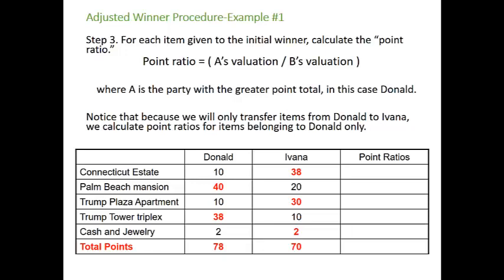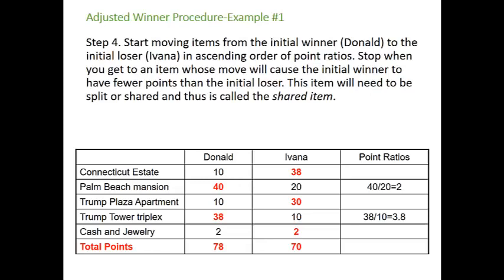Since we're only going to be transferring items from Donald, our initial winner, to Ivana, our initial loser, we only calculate point ratios for items belonging to Donald. For the Palm Beach mansion, we take Donald's points of 40 divided by Ivana's points of 20, giving a point ratio of 2. For the Trump Tower triplex, we take Donald's 38 points divided by Ivana's 10 to get a point ratio of 3.8. We start moving items from Donald to Ivana in ascending order of point ratios, stopping when a move would cause Donald to have fewer points than Ivana — that item will need to be split, and is called the shared item.